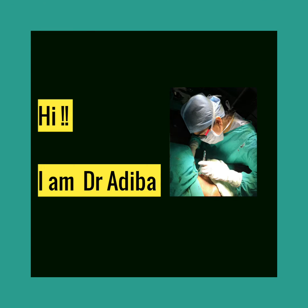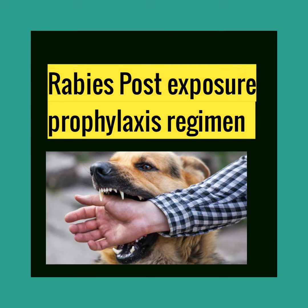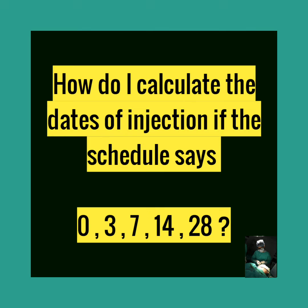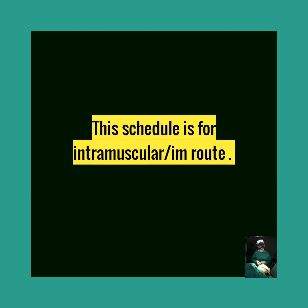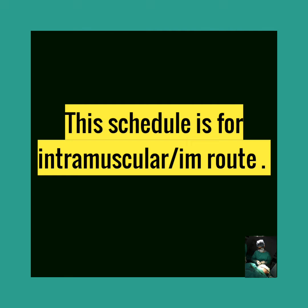Hi, I am Dr. Adiba and today we are going to learn about Rabies post-exposure prophylaxis regimen and how to calculate the dates of injection if the schedule says 0, 3, 7, 14 and 28. Firstly, this schedule is for the intramuscular route.